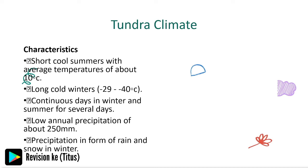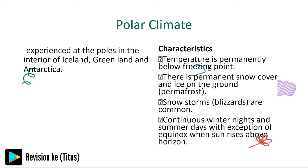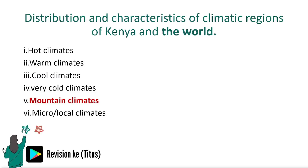Tundra climate characteristics include long cold winters and precipitation in the form of rain and snow in winter. The polar climate is experienced in the poles — the interior of Iceland, Greenland, and Antarctica. Temperature is permanently below freezing point, there is permanent snow and ice on the ground, snowstorms are common, and there are continuous winter nights and summer days, with the exception of equinoxes when the sun rises above the horizon.